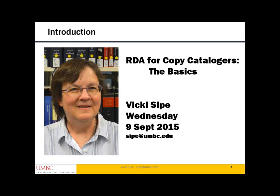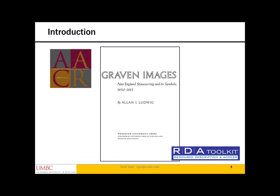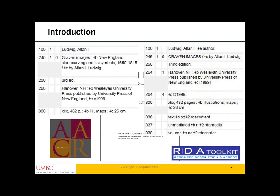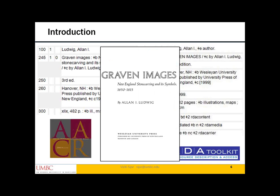The use of different data content standards such as AACR2 and RDA can result in bibliographic records that describe the same resource in different ways — records that look different but describe the same resource. Here we have a title page for a book entitled Graven Images. On the left is a MARC bibliographic description created using AACR2; on the right, a description based on RDA. There are many differences in the content of the MARC fields and even different MARC fields between the two records — 260s vs 264s, and fields 336, 337, and 338. But both describe the same title page, each in their own way.